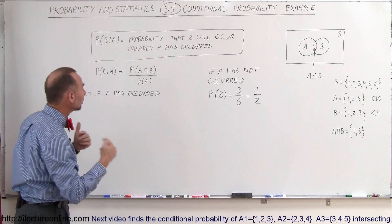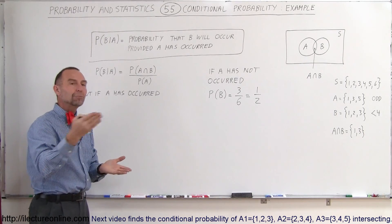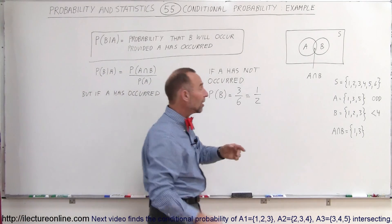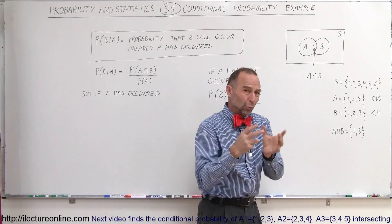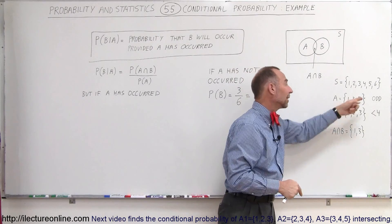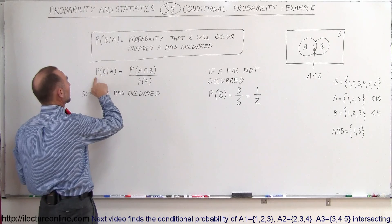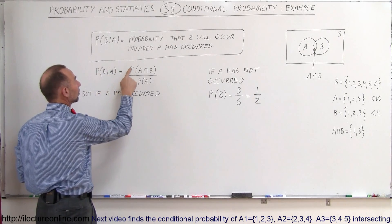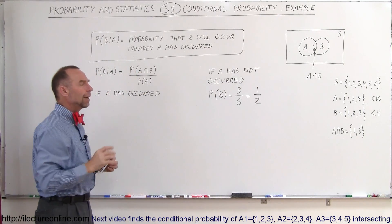But what if we have prior knowledge that A has already occurred? What is therefore the probability that B will occur? If A has occurred, that means you tossed the die and got a 1, a 3, or a 5. That then becomes the new sample space. The equation is: the probability that B will occur provided A has occurred equals the probability of the intersection of A and B, divided by the probability of A.